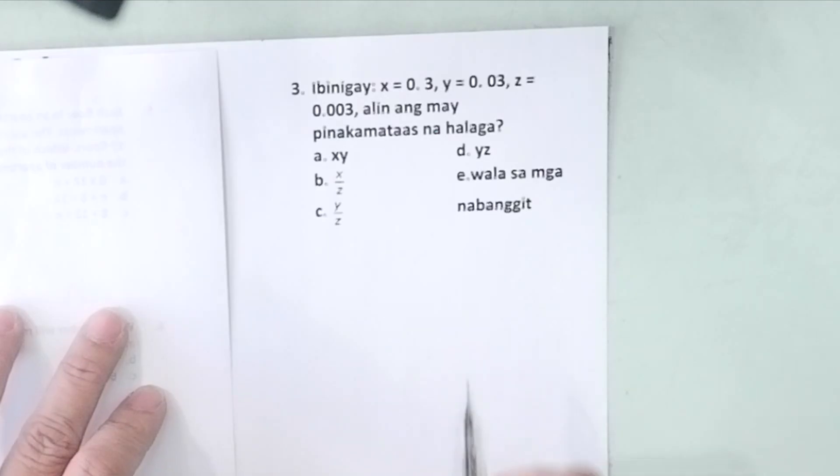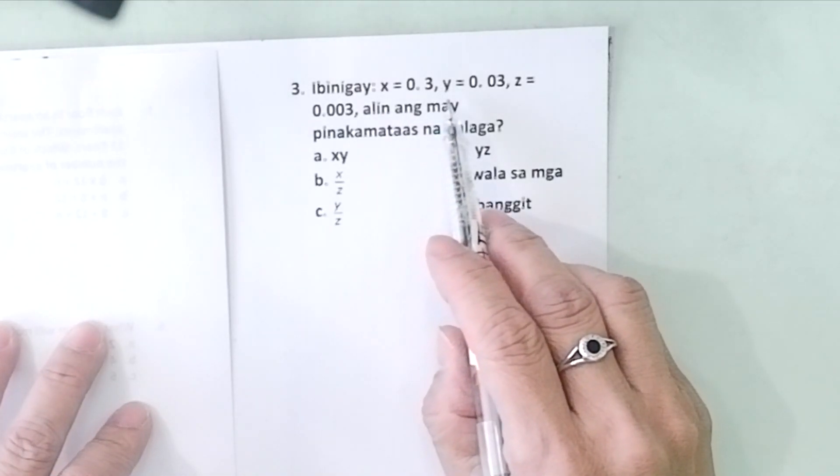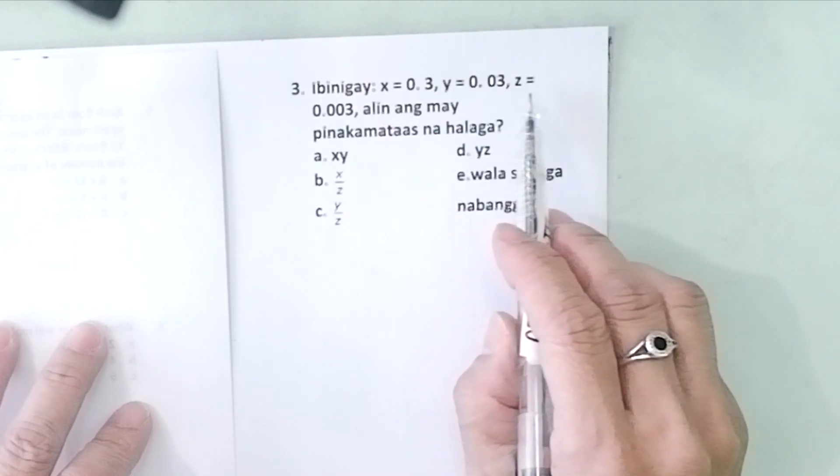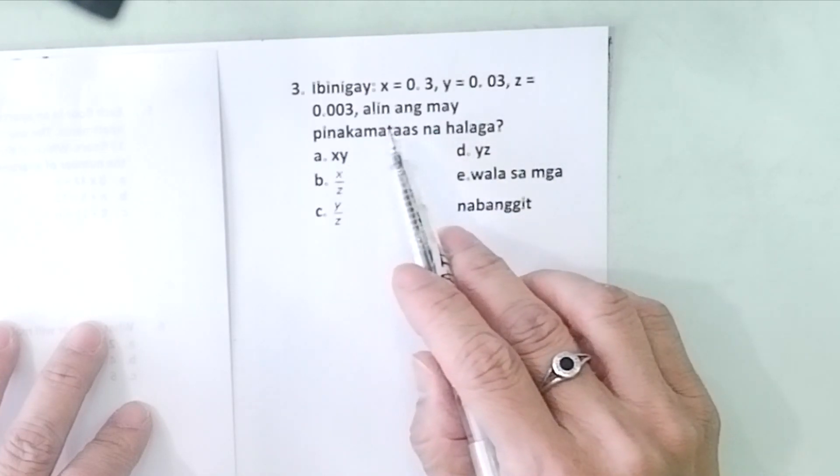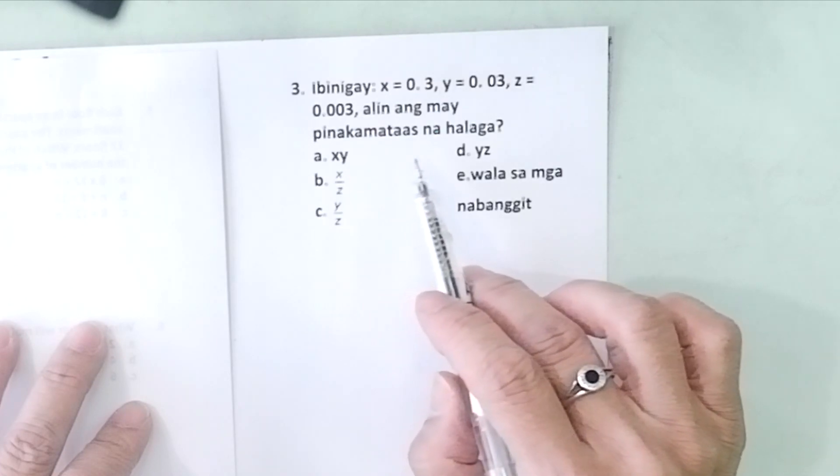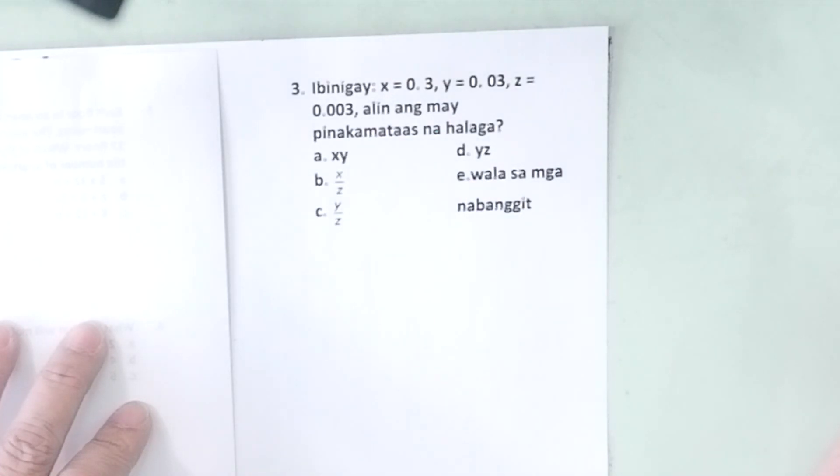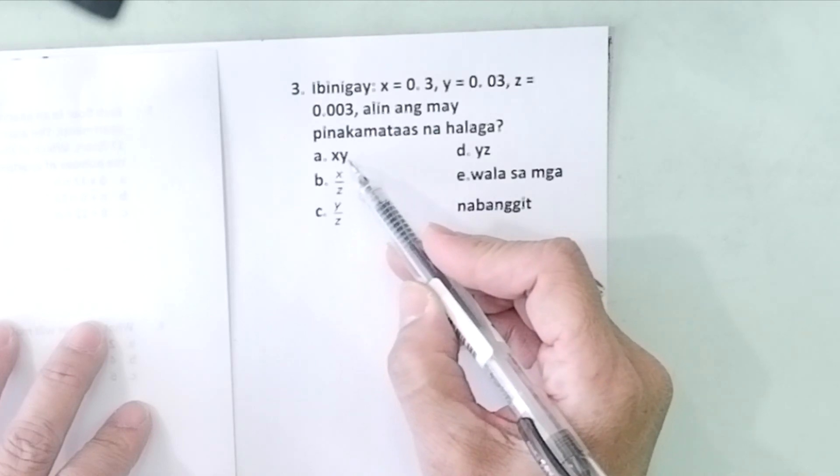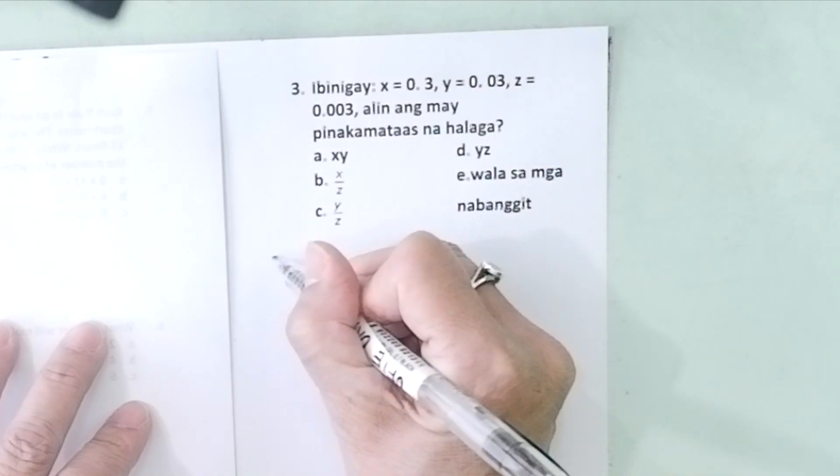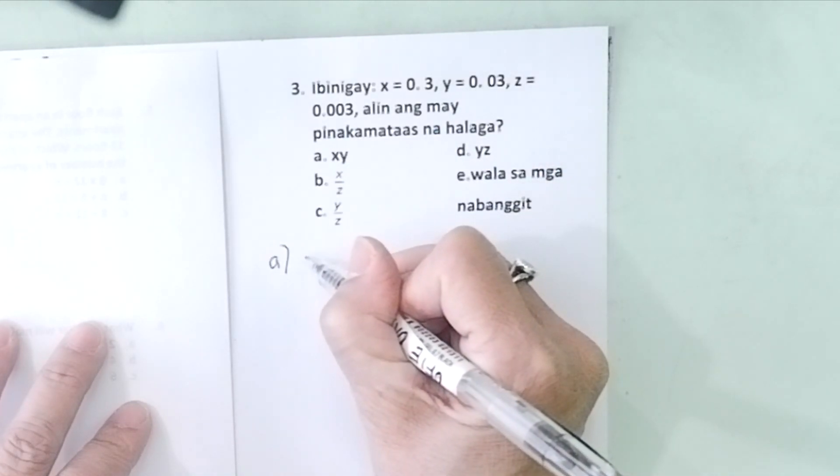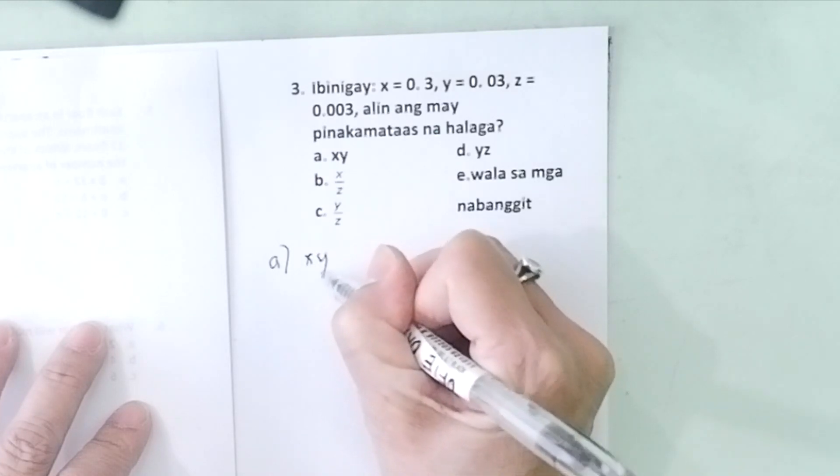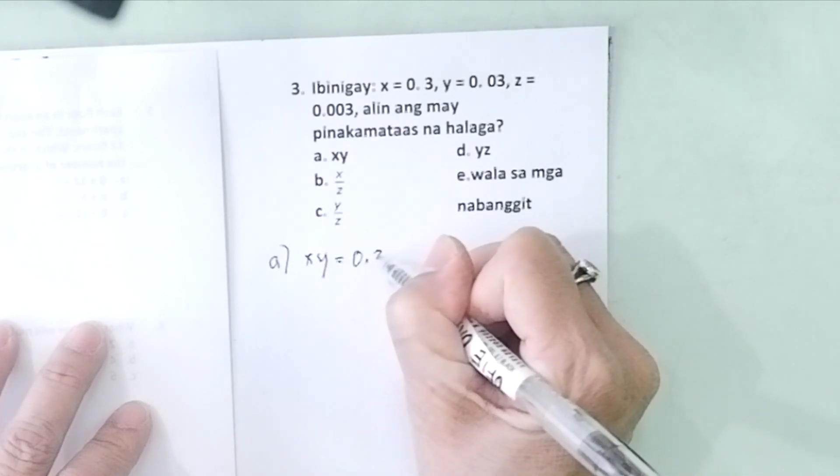Problem number three: Ibinigay x = 0.3, y = 0.03, z = 0.003. Alin ang may pinakamataas na halaga? Letter A: x times y.